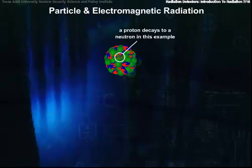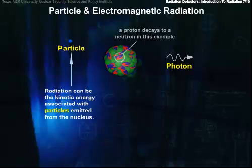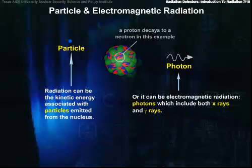Now let's look at radiation and begin to understand that. Radiation is simply energy in some form. It can be kinetic energy associated with particles emitted from the nucleus, or it can be electromagnetic radiation, photons, which include both x-rays and gamma rays.